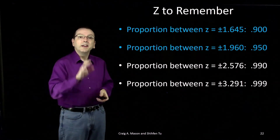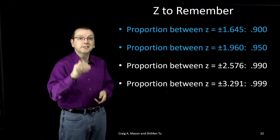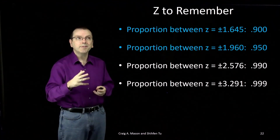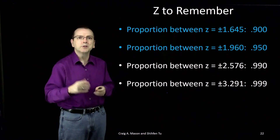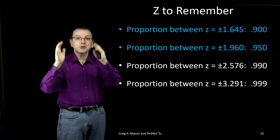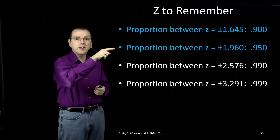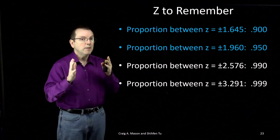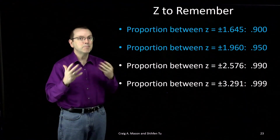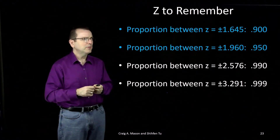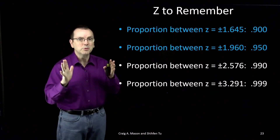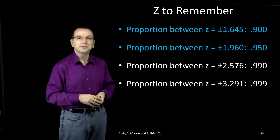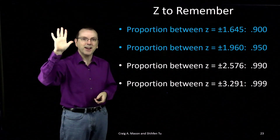So there they are. These will come up a lot in statistics, particularly the first two highlighted in blue: the z of 1.645 that bounds 90% of the distribution, and the z of 1.96 that bounds 95% of the distribution. We'll come back to these z-scores later, at which point you'll hopefully recall which is the correct one to use. Take care. Bye-bye.